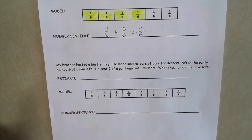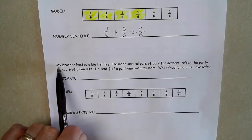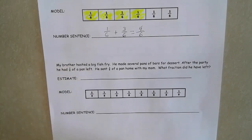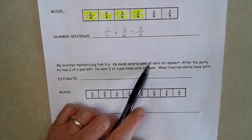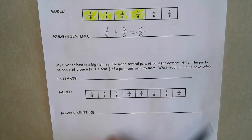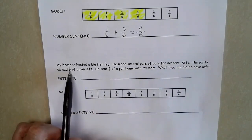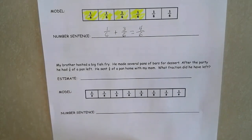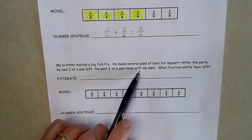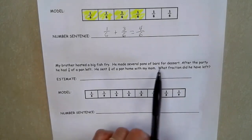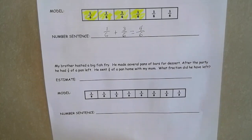If I look at the next math problem, it tells me my brother hosted a big fish fry. He made several pans of bars for dessert. But after the party, he still had seven eighths of the pan left. He sent three eighths of the pan home with my mom. What fraction did he have left?